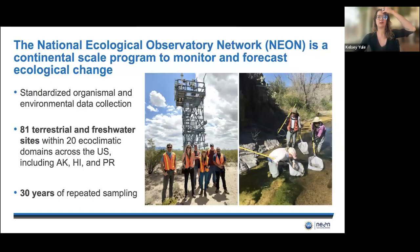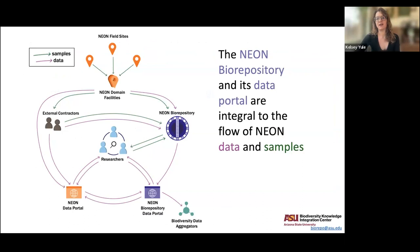We all probably know what NEON is — there are 81 terrestrial and freshwater sites. The main thing I want to say is that in addition to all of the amazing data that NEON is collecting, they are also collecting samples at all of those sites. At the NEON Biorepository, we consider ourselves like a turntable that pulls in NEON samples and data and then provides them out again to researchers to do novel things with NEON samples, which then come back to enrich the ecological data community.